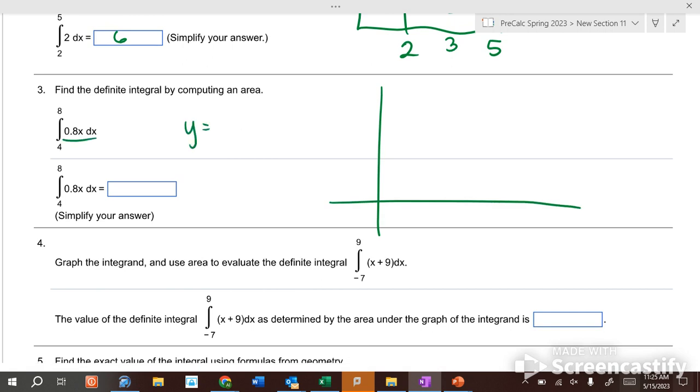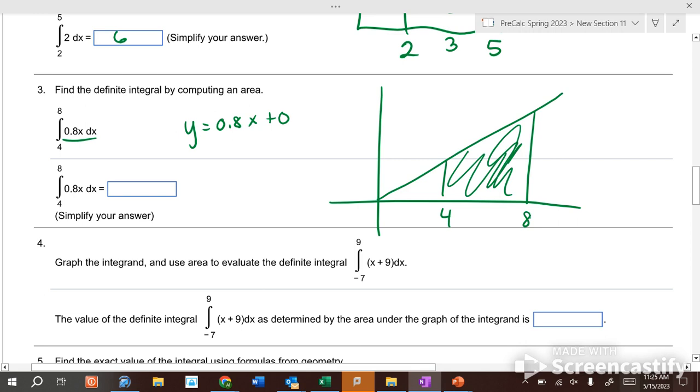What's this graph equal to? y equals 0.8x. What does that look like? Well, let me add a zero in there behind it. What's the slope? 0.8. What's the y-intercept? Zero. So it kind of goes like this, and we're going from four to eight. We're finding this area under here. What shape is that?